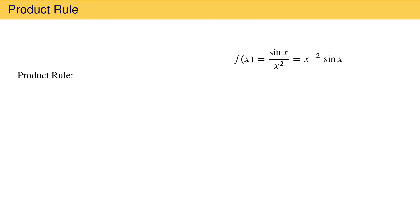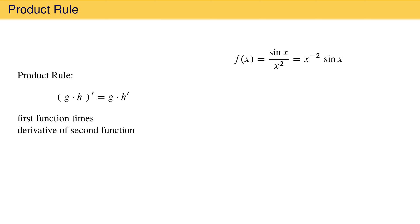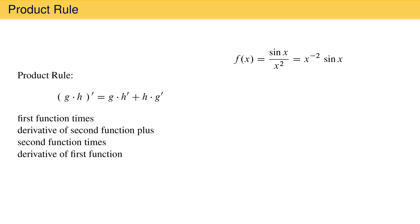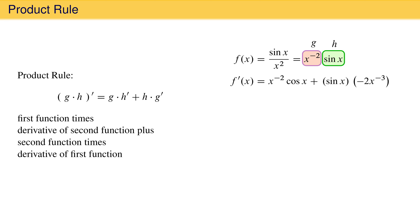The product rule states that for a product of functions, let's call them g and h, the derivative of the product is the first function times the derivative of the second function plus the second function times the derivative of the first. This gives us a way to evaluate the derivative of our example function in which x to the minus 2 is the first function g, and sine x is the second function h. The first derivative is x raised to the minus 2 power times the derivative of the second function, which is cosine x, plus the second function sine x times the derivative of the first function, which is minus 2 times x to the minus 3 power. Rearranging this, we have cosine x over x squared minus 2 sine x over x cubed.